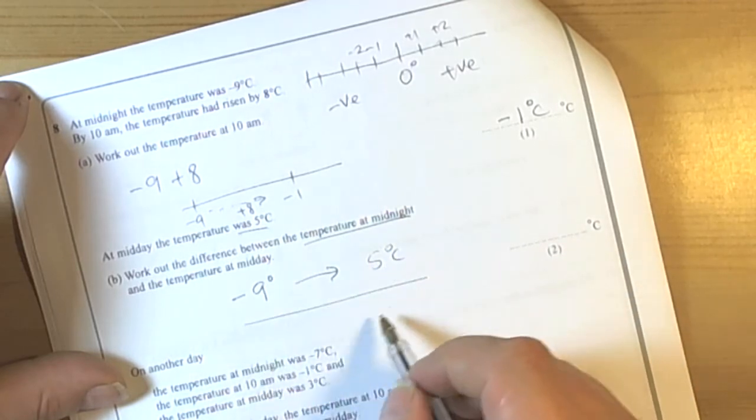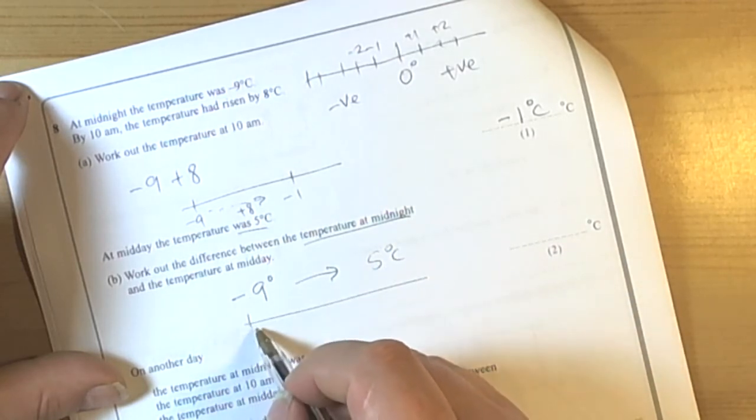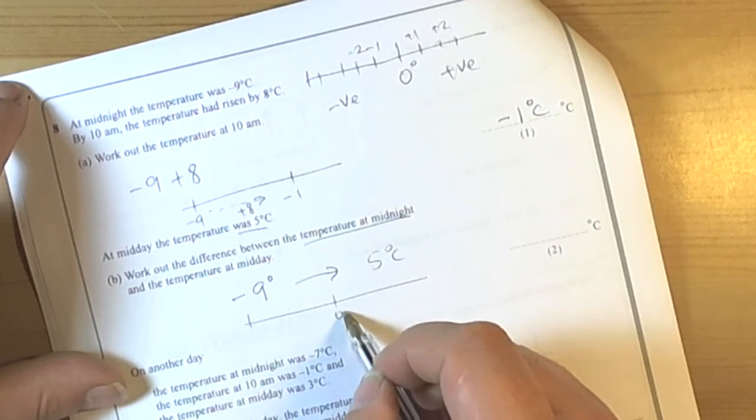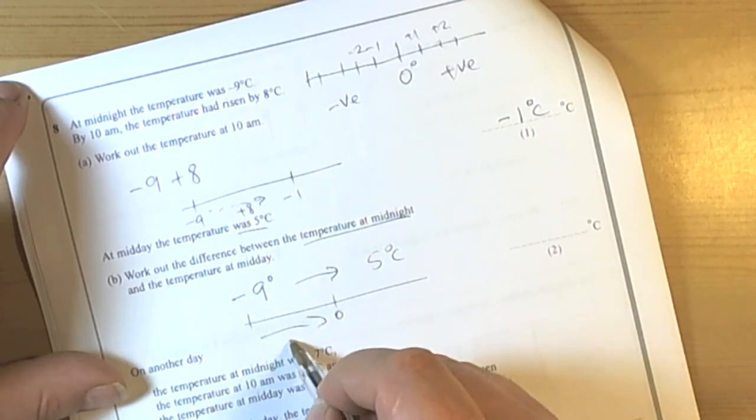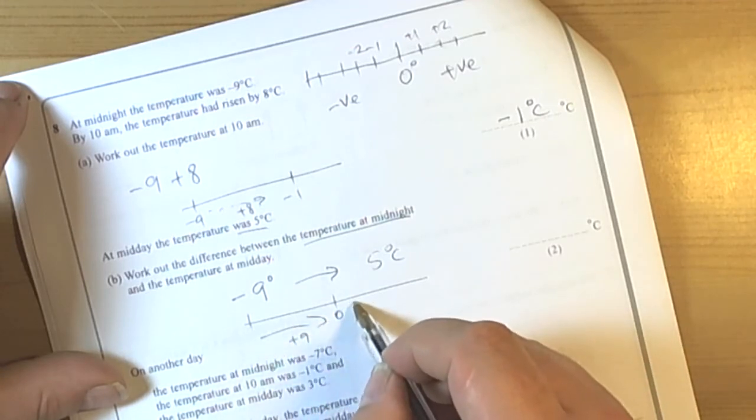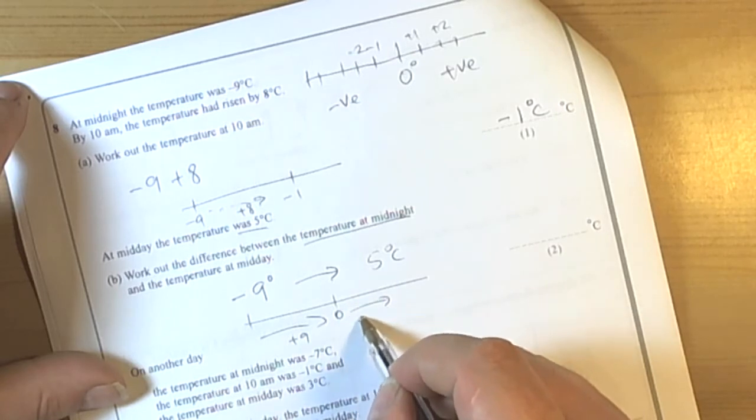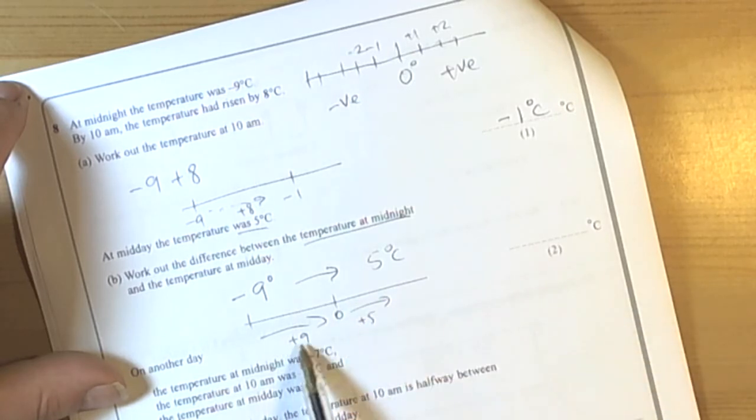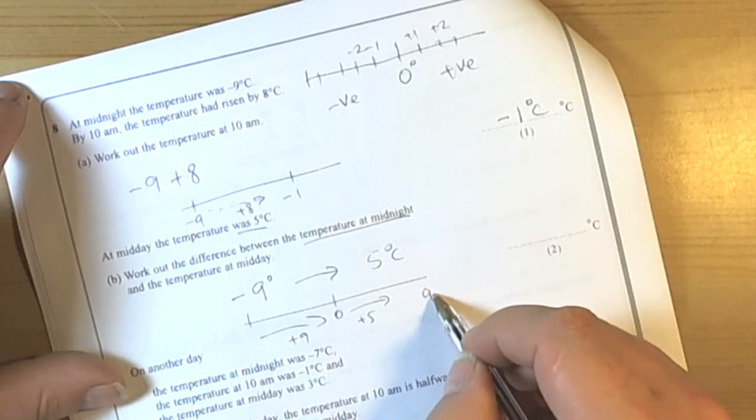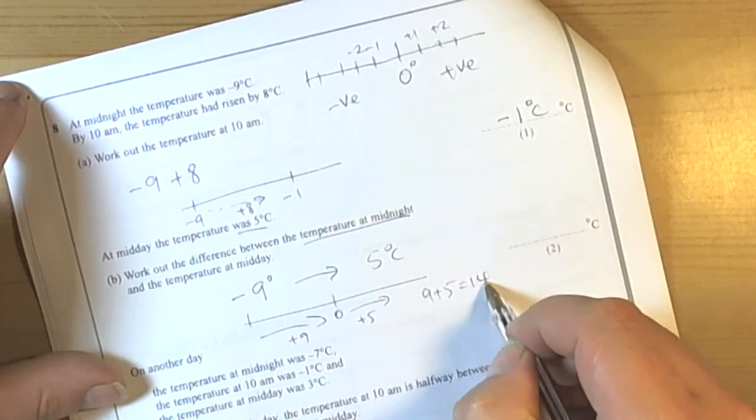So again if we think about our number line that means we started at minus 9. We've gone through 0. So to get from there to there we have to add 9. And then we've gone across to 5. So we've had to add another 5. So altogether we added 9, added 5 and 9 plus 5 is equal to 14 degrees.